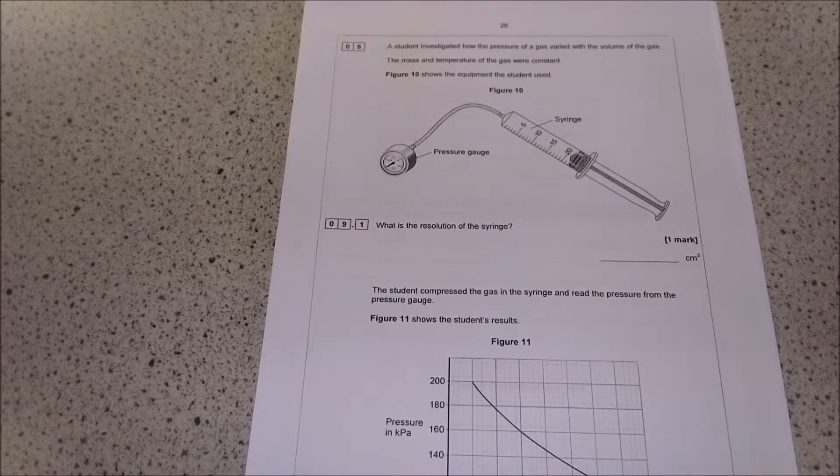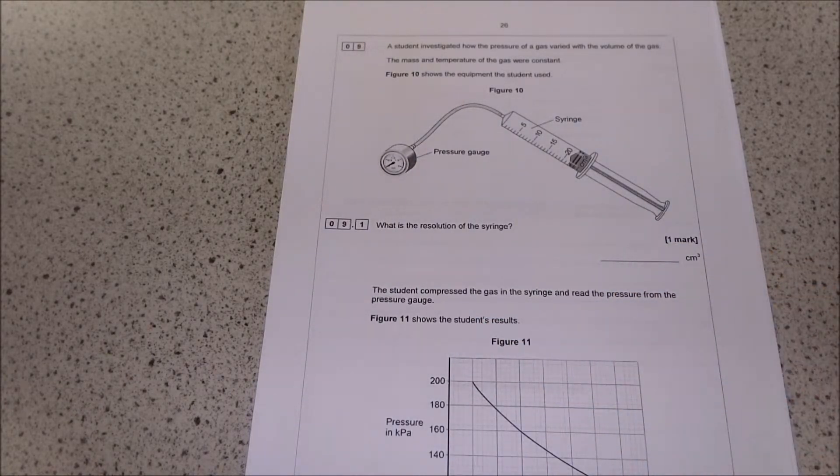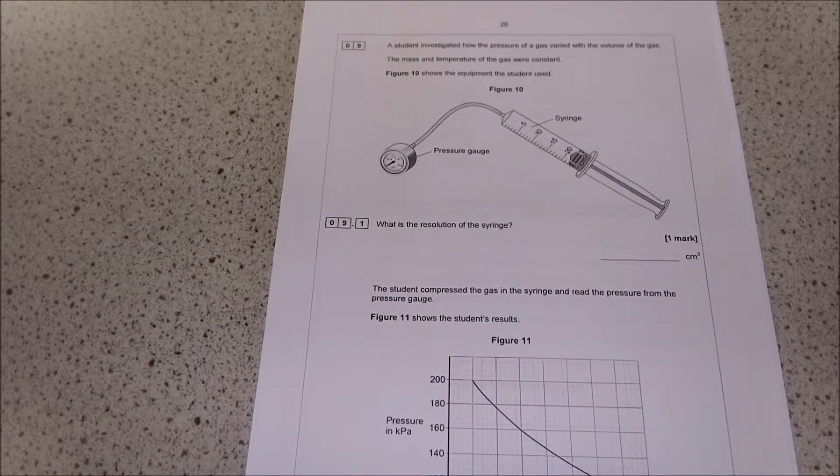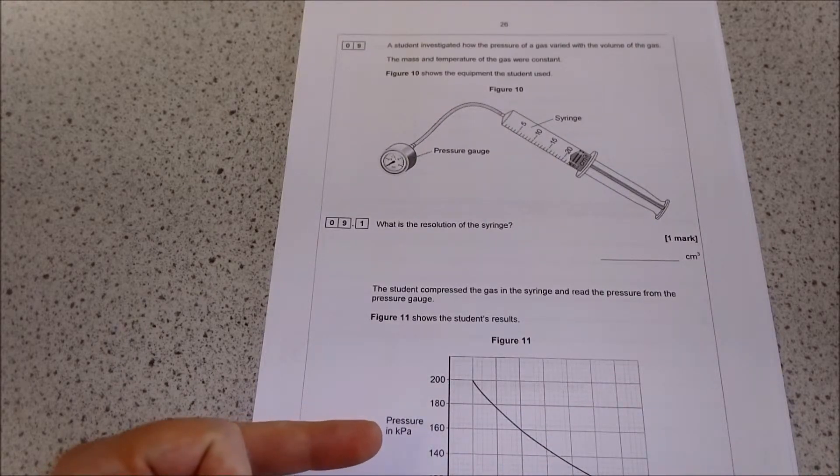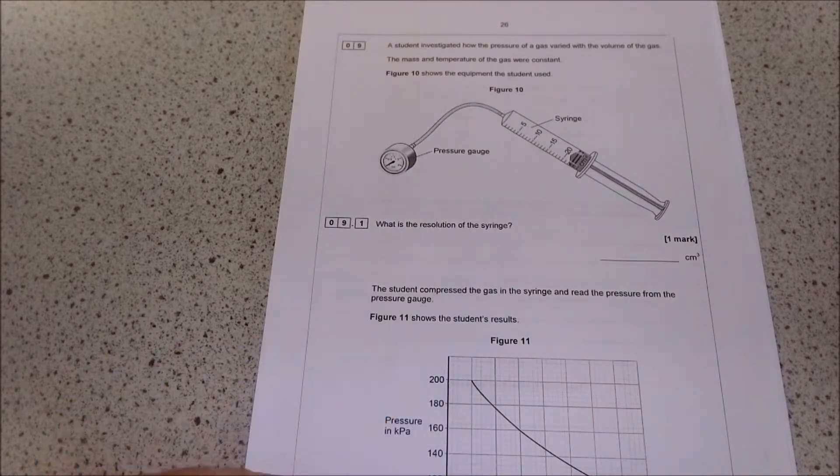So the student compressed the gas in the syringe and read the pressure. The student's results are shown in the table. So it showed that as the volume of gas increased, the pressure decreased.